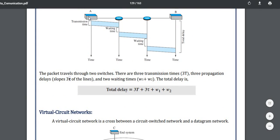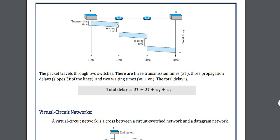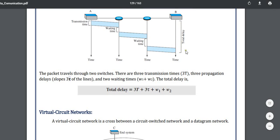Here we have port A and port B with two switches in between them. First of all there is transmission time for transmitting the data, then there is some waiting time for processing delay. After that we send the data again to the next switch, there is a waiting time, and after that it sends again to port B.